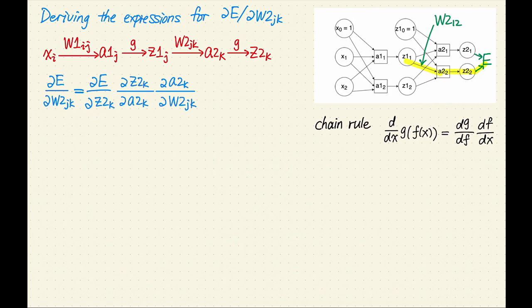Next, z2 is g of a2, therefore we have partial z2 sub k over partial a2 sub k. Next, a2 is a function of the weight W2 and the hidden unit value z1. Since we want to take the derivative with respect to the weight, we have partial a2 sub k over partial W2 sub jk.